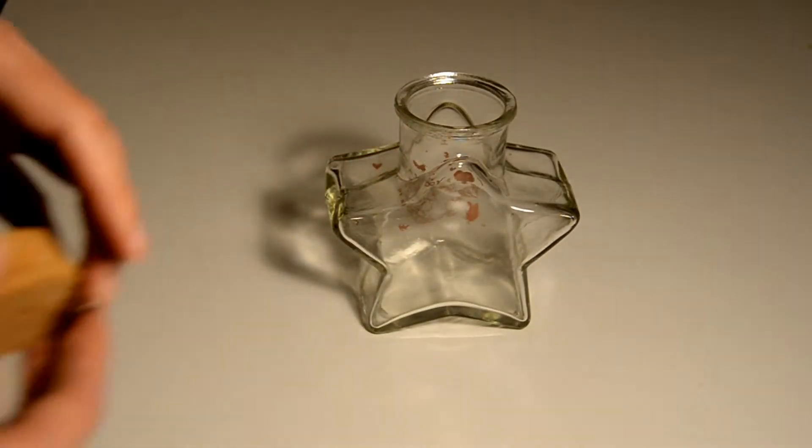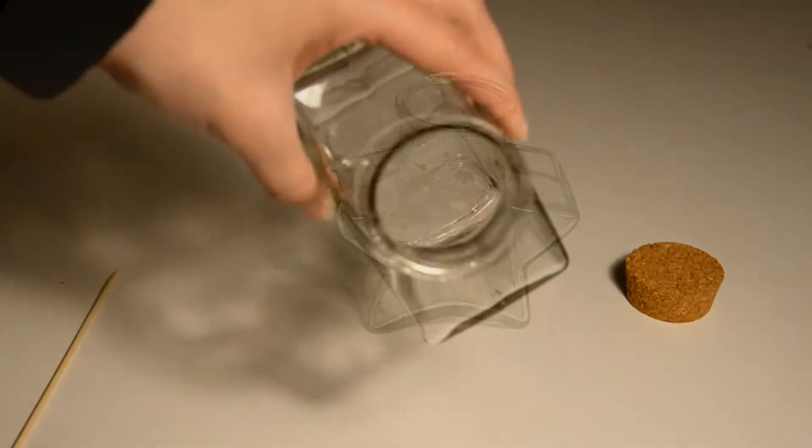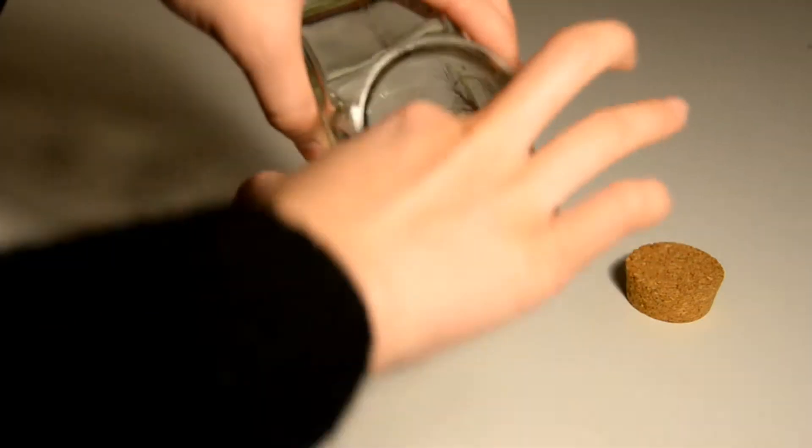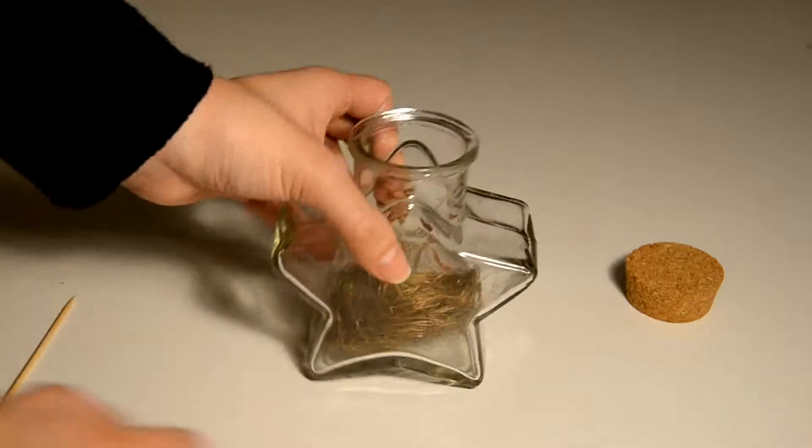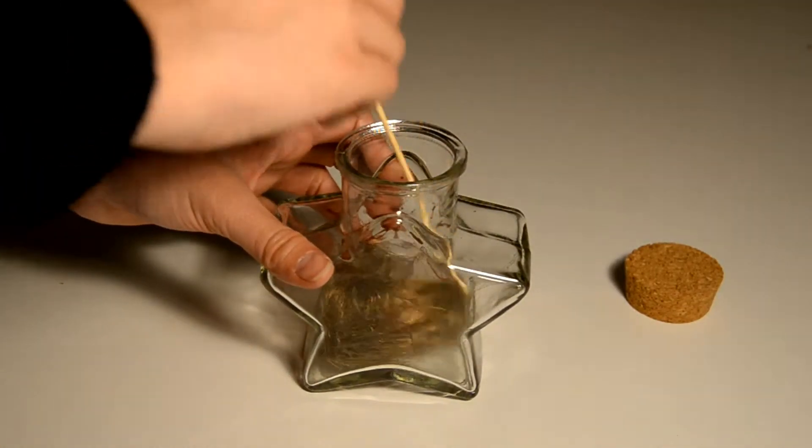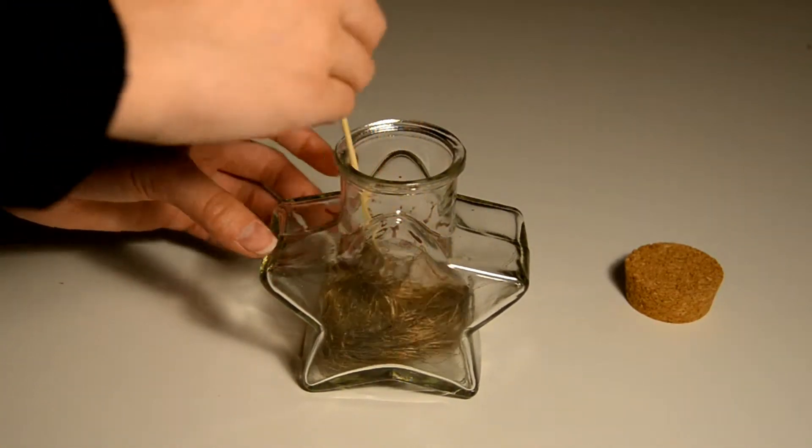Once you open up the bottle, now we can place the birds nest inside. If your birds nest is too big, just use the outside of the bottle to measure how big you want the nest to be.